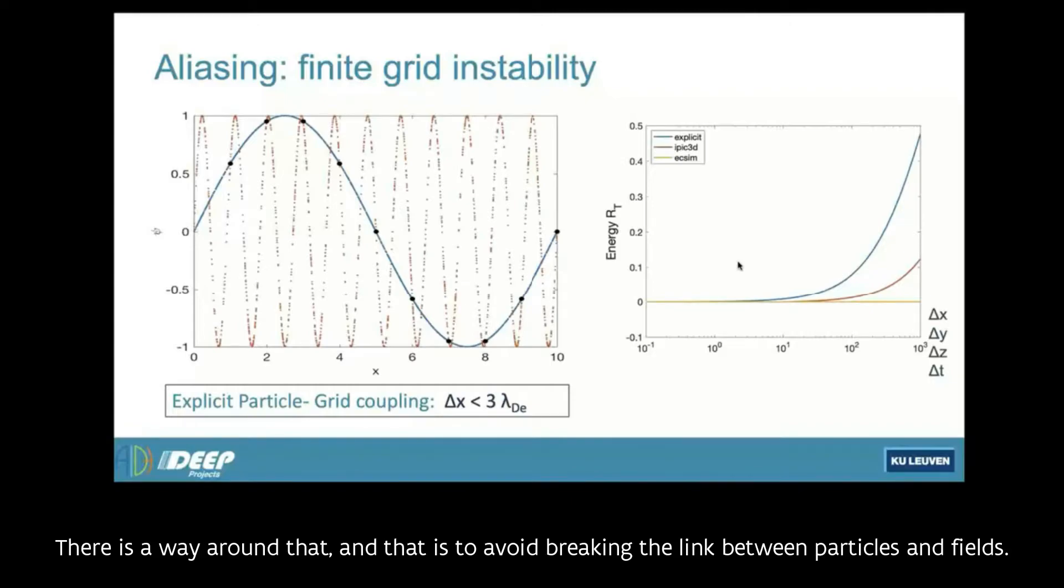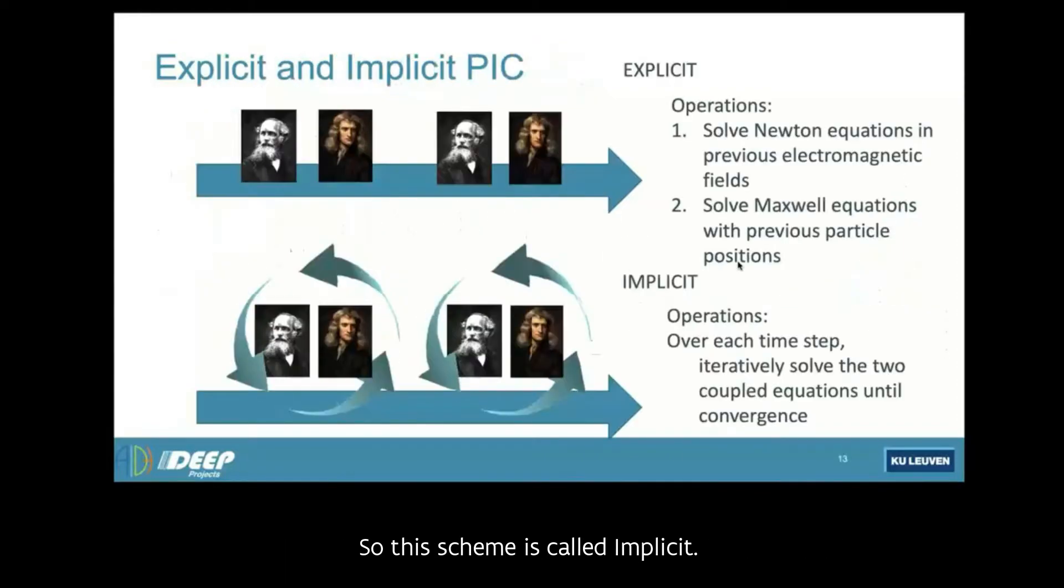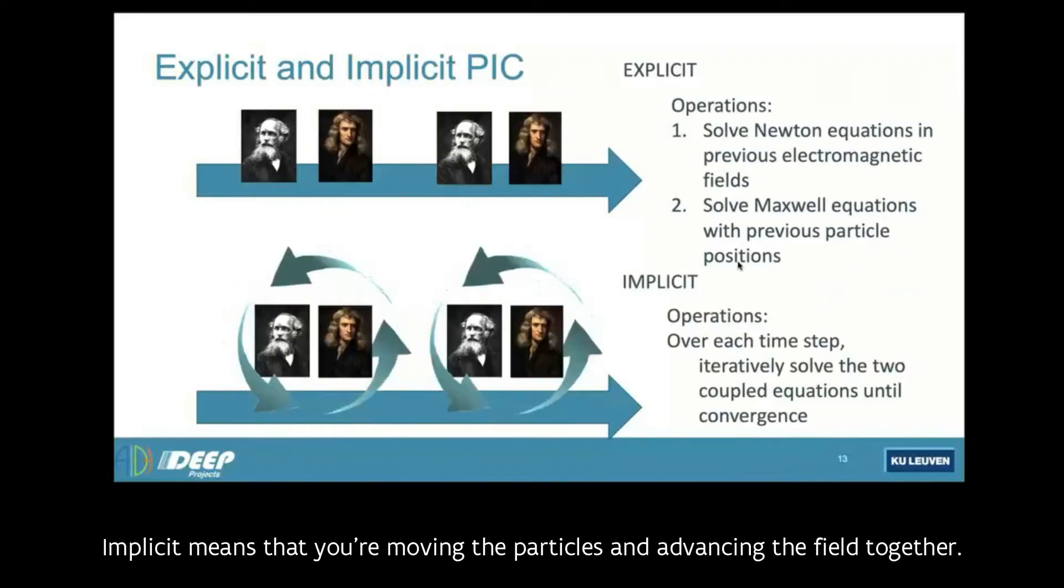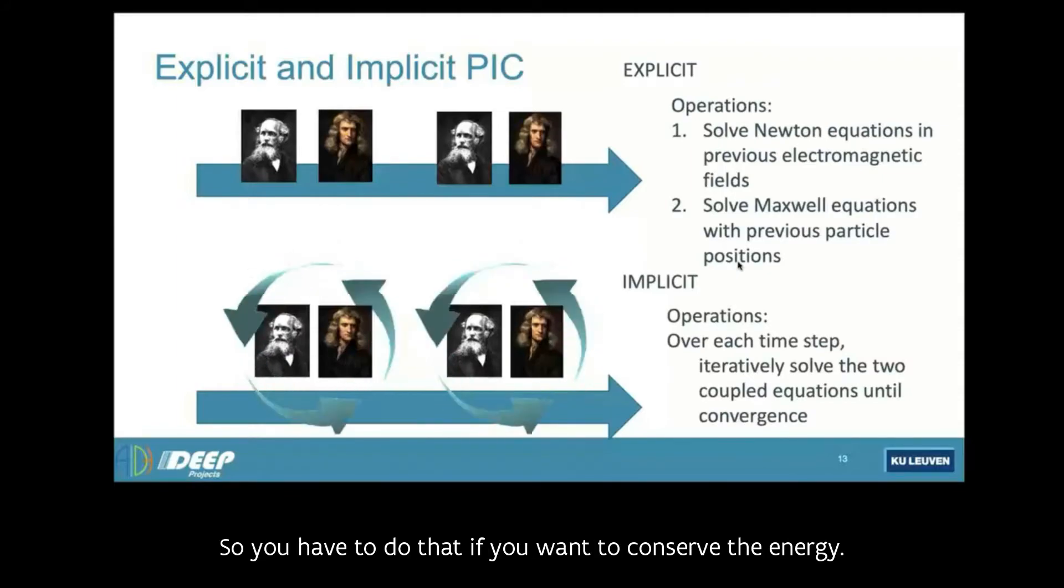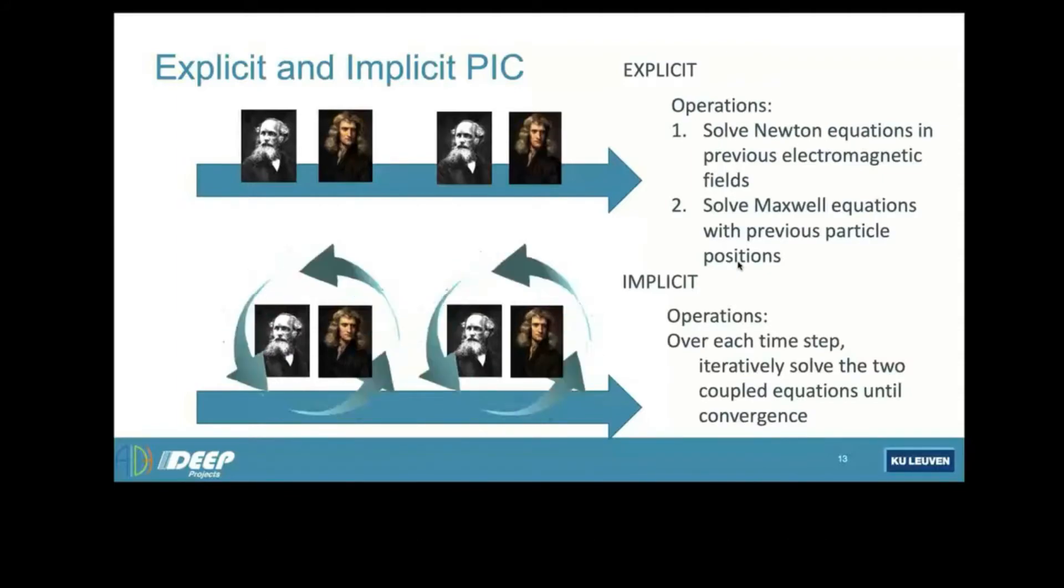There is a way around that, and that is to avoid breaking the link between particles and fields. So to make, in my opinion, the best use of the modern computers, you want to go beyond this explicit method that fixes the scales, but you want to go to a more advanced scheme that conserves energy. So this scheme is called implicit. Implicit means that you're moving the particles and advancing the field together. Together means there is an iteration. For the mathematicians or the expert in scientific computing among you, it's a Newton iteration for solving a non-linear equation. So you have to do that if you want to conserve the energy.